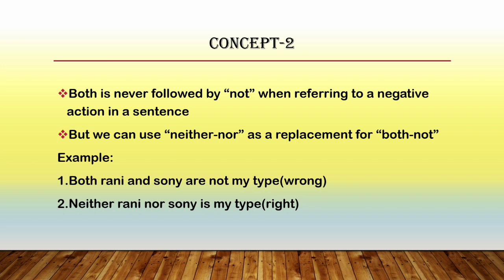Now we shall see the second concept of the second rule. The second concept tells us that when we are referring to a negative action or negative meaning involving two persons, cities, or anything, when using 'both', it should never be followed by the word 'not'. Instead of 'both...not', we can use 'neither...nor' to get a meaningful sentence that indicates the same negative meaning.